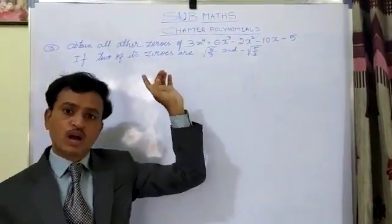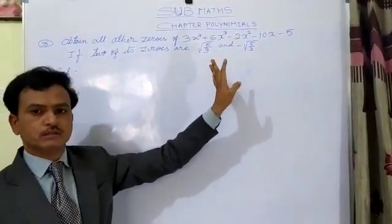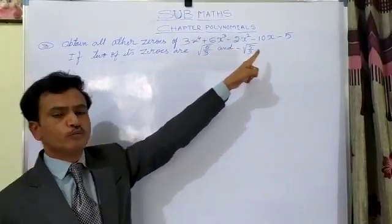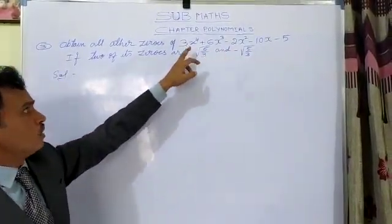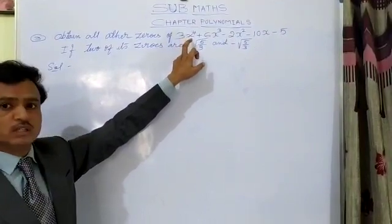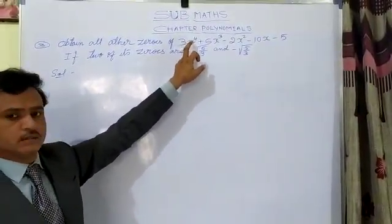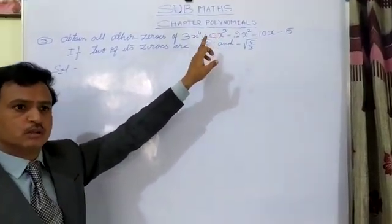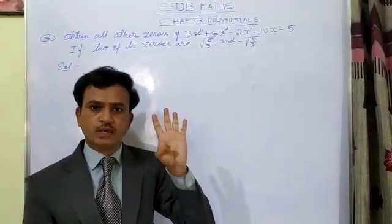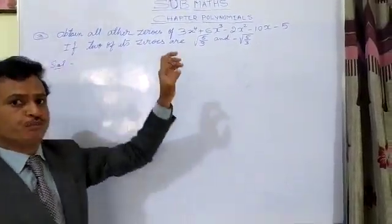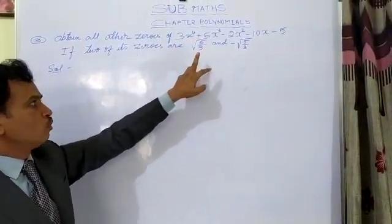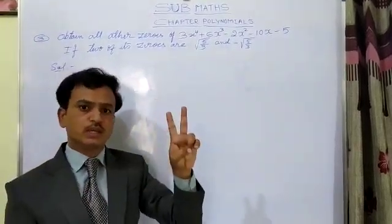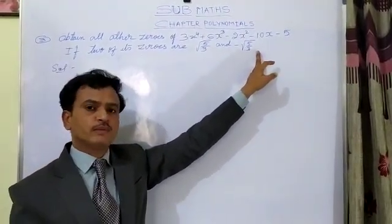Children, you first have to understand what the given points are and what we have to find. Now first we have to know the highest power in this polynomial — the degree of x. Here the highest degree of x is 4, which means in this question we will get 4 zeros. But in the question, 2 zeros are already given: square root of 5 by 3 and minus square root of 5 by 3. The remaining two zeros we have to find.